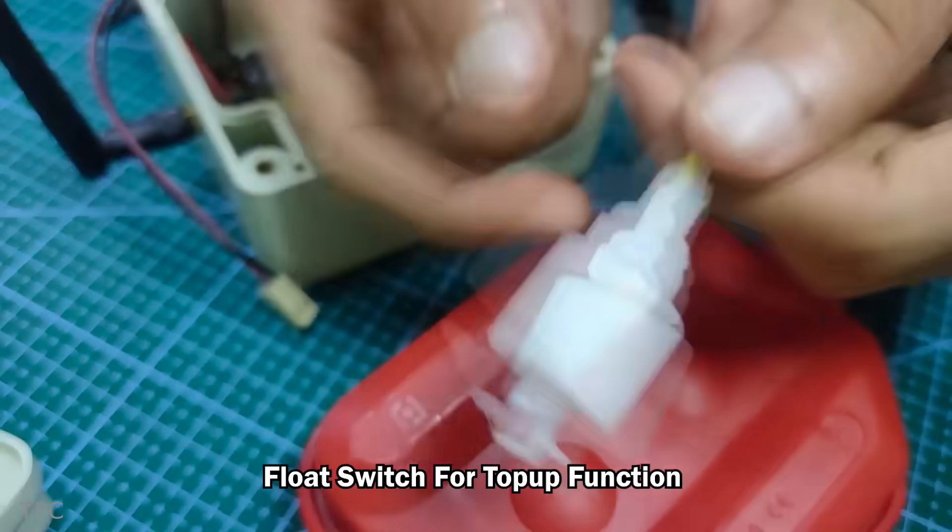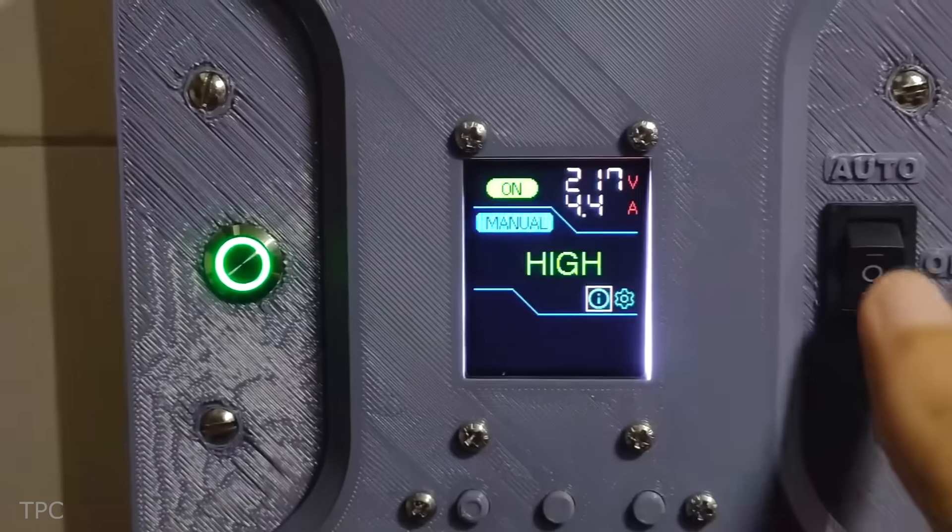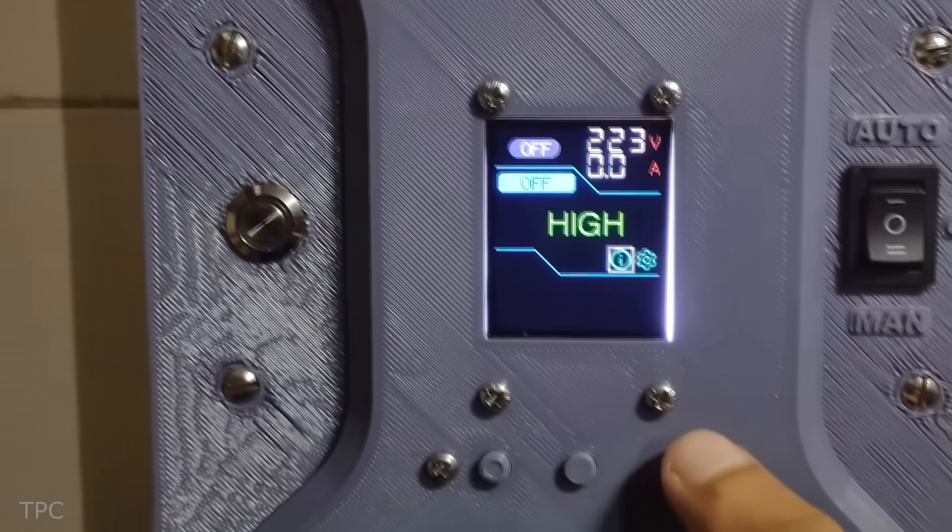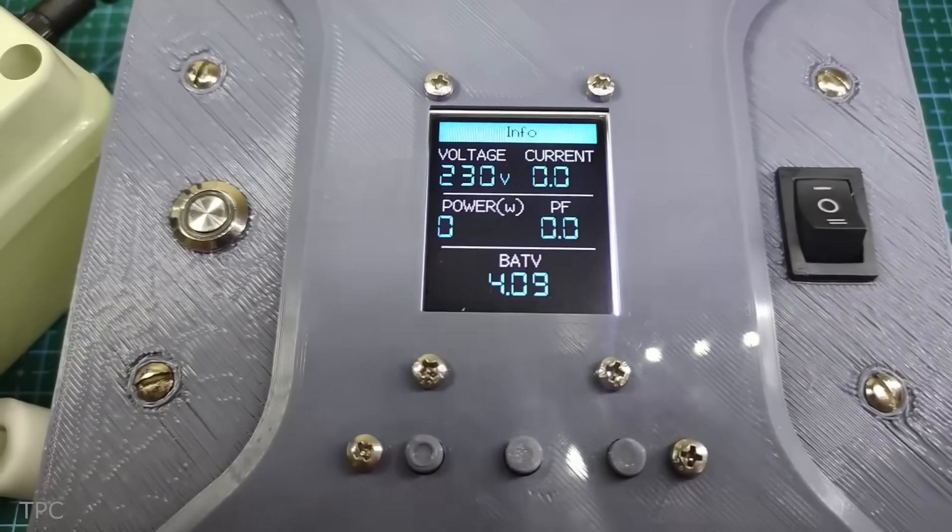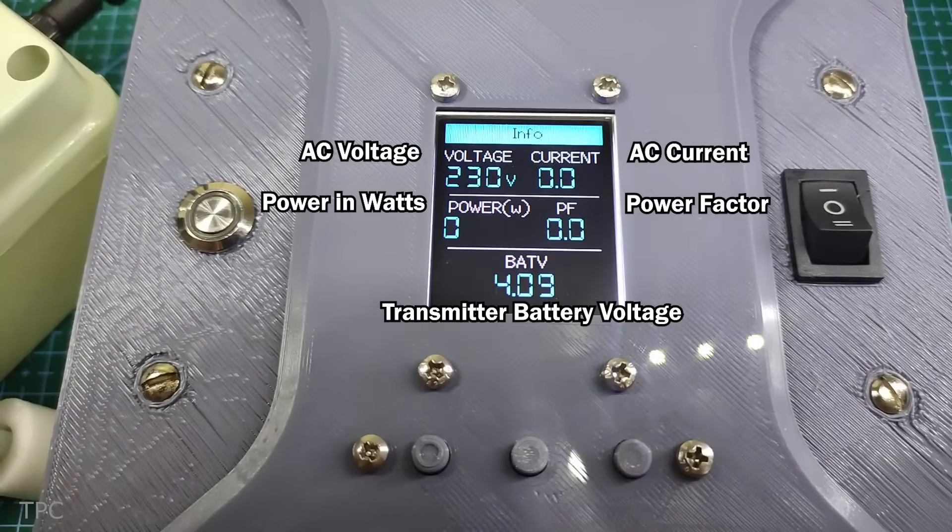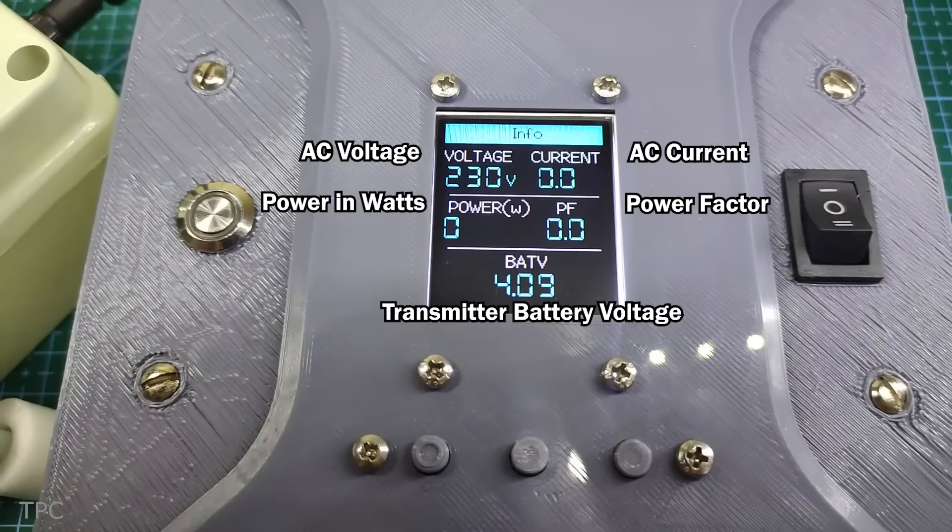It features two float switches to monitor the water level in the tank and offers three controlling modes: auto, off, and manual. All data, including voltage, current, power, and transmitter battery voltage, is displayed on the TFT screen. Number 17.